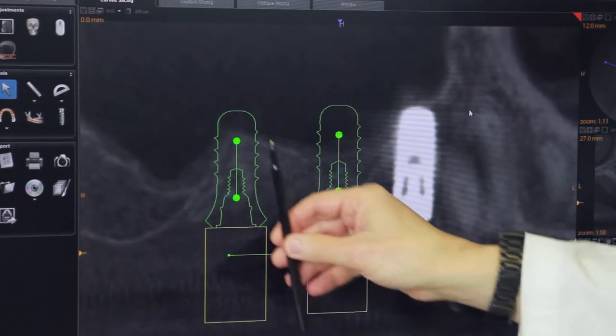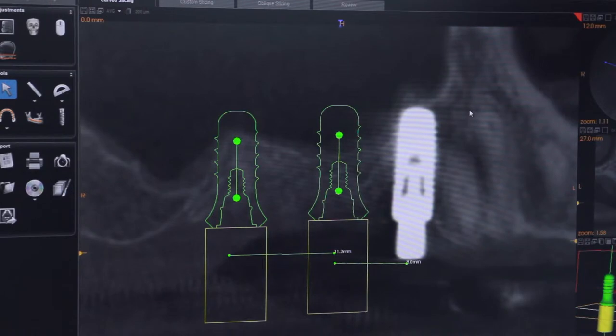If the implants are placed and puncture your sinus, you're going to end up with a communication into your sinus which will cause you to have fluid leak from your nose when you drink fluids, and you can end up with a massive sinus infection which would require several days or several weeks of treatment as well as surgery to correct the problem.